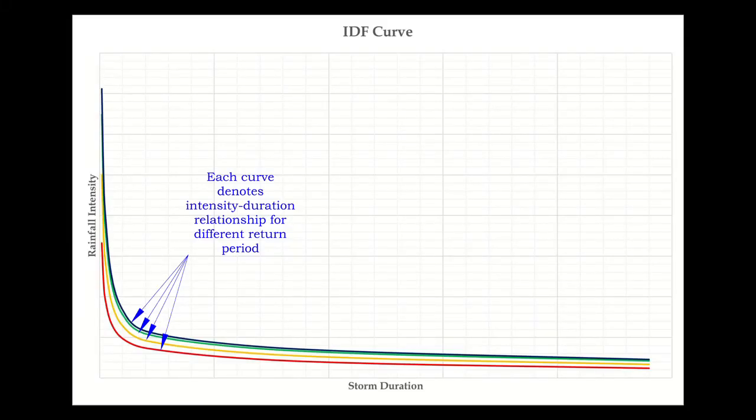When the point rainfall data are available for several years, we can attempt to construct IDF curve for the station. IDF is the short form of intensity-duration-frequency. It represents the relationship between rainfall intensity, storm duration, and probability of occurrence, which may also be expressed in return period.